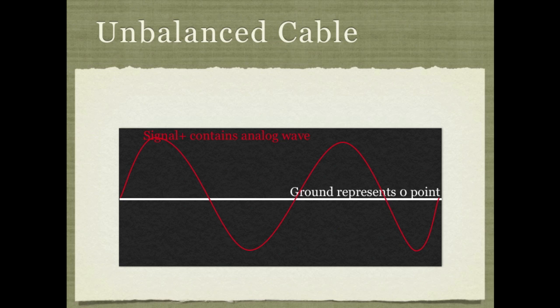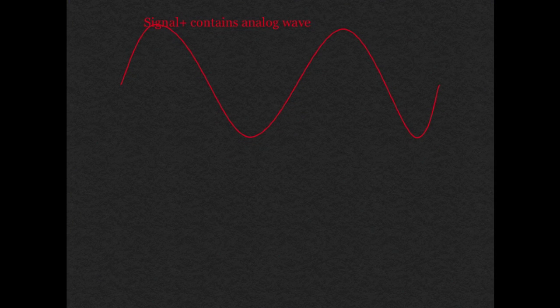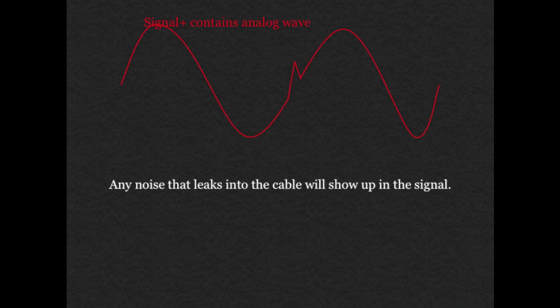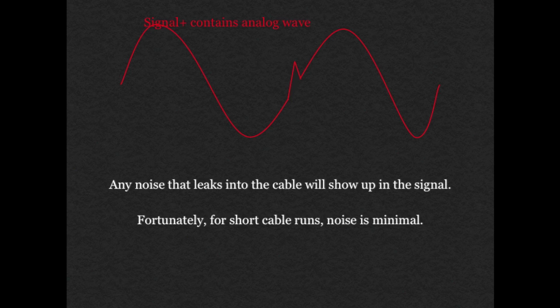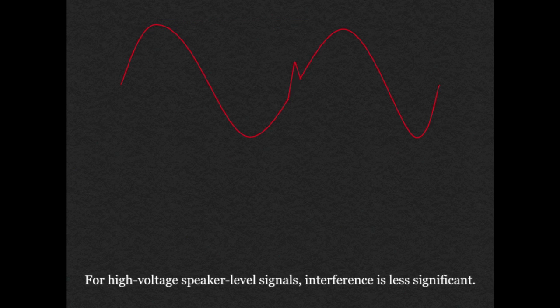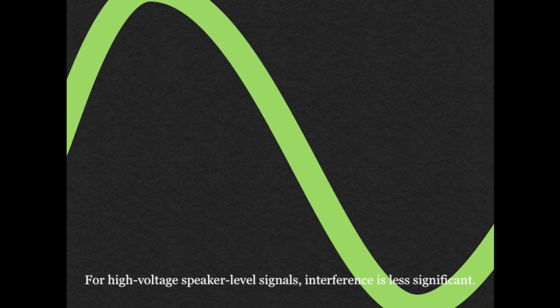One of the disadvantages to using electricity to represent an analog sound wave is that there are bits of electrical interference happening all the time. Any noise that leaks into the cable will show up in the signal when it reaches the next piece of equipment. Fortunately, the noise is pretty minimal over shorter cable runs. With high voltage speaker level signals, the interference becomes almost insignificant — you'd have to zoom out so far that the tiny spike of interference is invisible in the midst of the extremely strong speaker level signal.